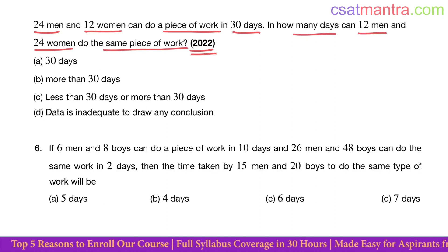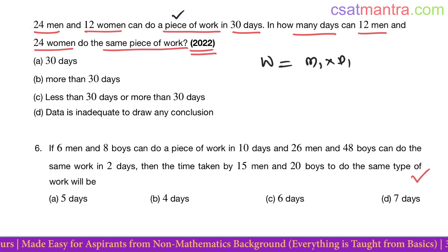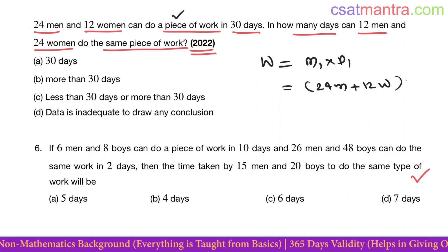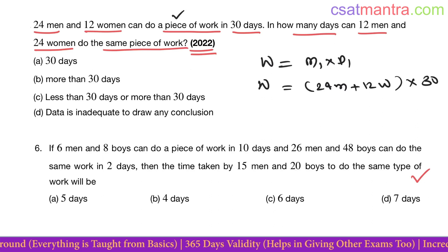Now please watch this problem from time and work part 1 lecture. See, from this sentence we can write total work done is equal—you know the formula is m1 into d1. So m1 is 24m plus 12w into d1 is 30. This is the total work done.